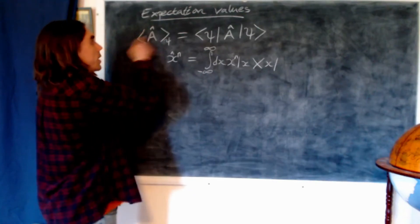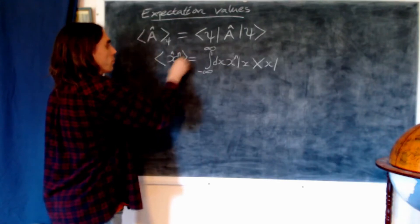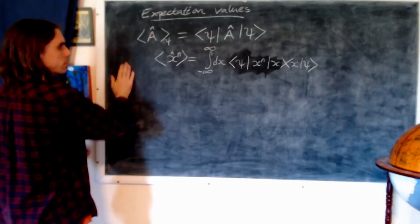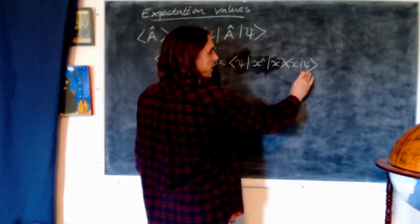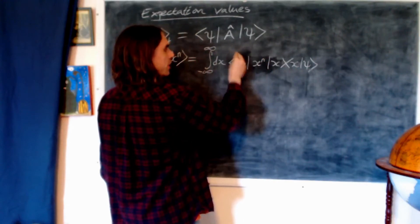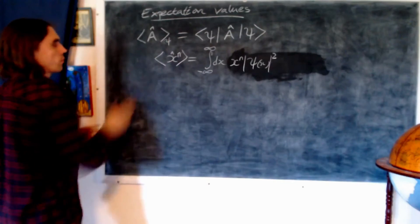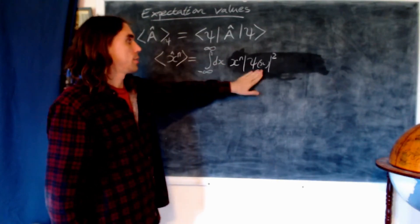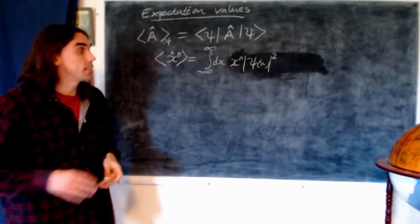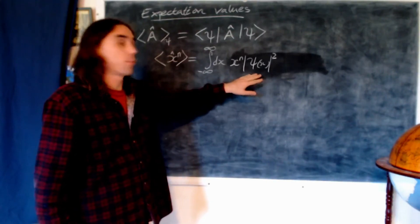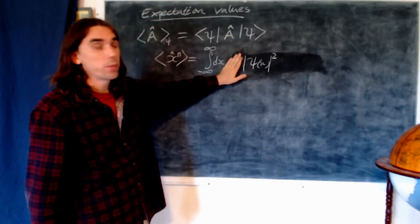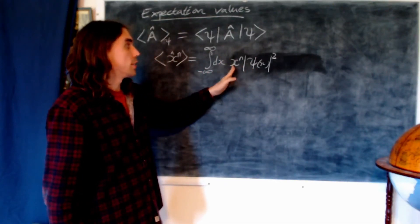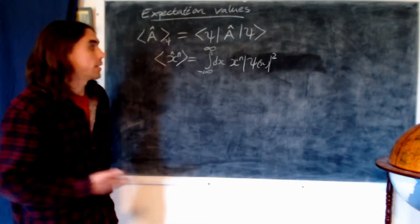To evaluate the expectation value, we sandwich it between states psi, which fit in through the integral, and we get the final result: the expectation value of the position operator raised to the power n equals the integral over all x of the modulus of psi squared times x to the n. This makes sense statistically, because the modulus of psi of x squared is the probability density — we're averaging x to the n weighted by the probability distribution, exactly as in classical statistics.